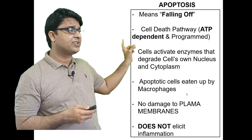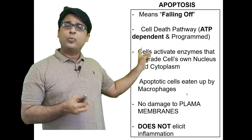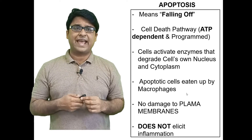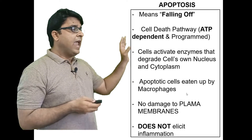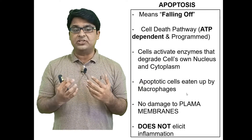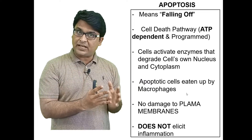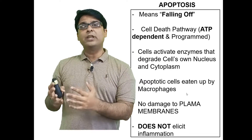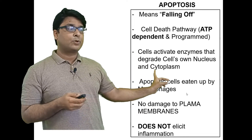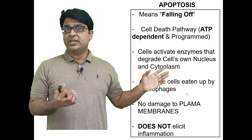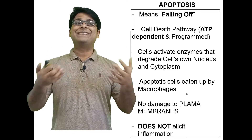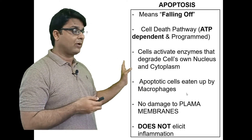What basically happens is that cells activate enzymes within their own structure — the caspases — and those caspases degrade the cellular proteins, the cytoskeletal proteins, as well as the nuclear contents. As a result, apoptotic bodies are generated, and they are then taken up and eaten by the macrophages.